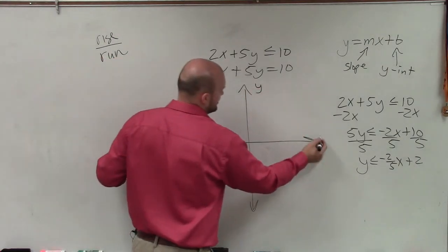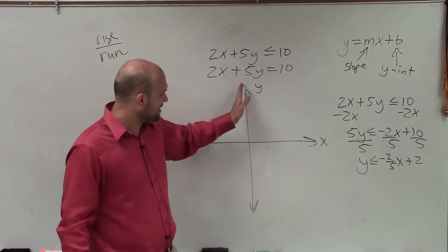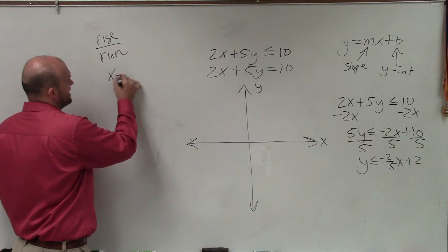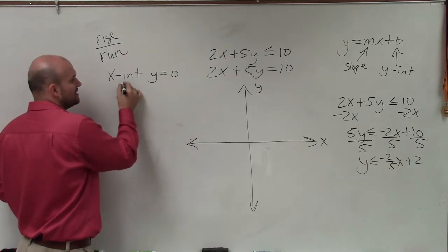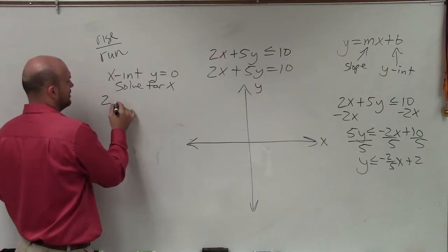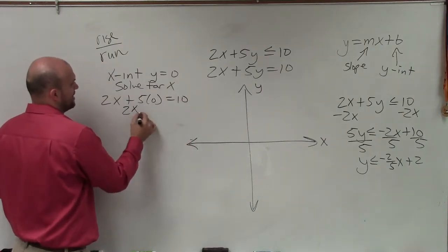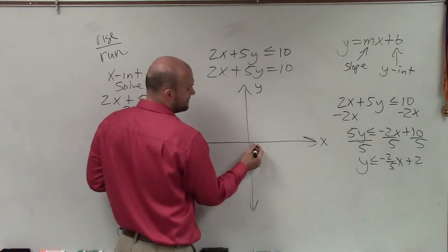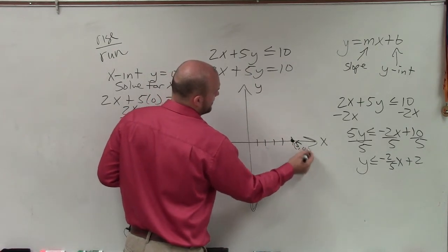We know that wherever the graph crosses the x-axis, the y-value is 0, and wherever it crosses the y-axis, the x-value is 0. To find the x-intercept, I set y equal to 0 and solve for x. Plugging in: 2x plus 5 times 0 equals 10, so 2x equals 10, divide by 2, and x equals 5. I can plot the point (5, 0) on the x-axis.